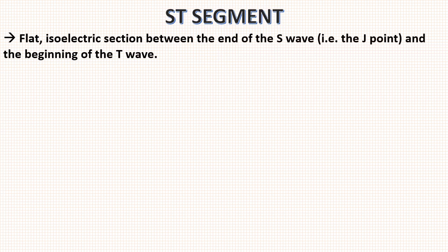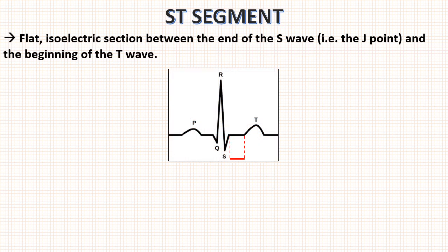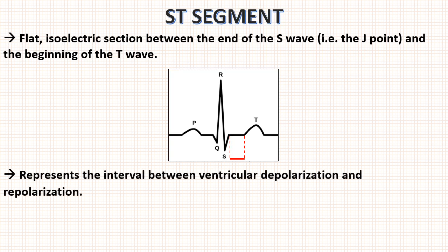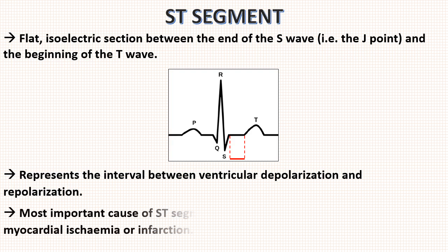Next is ST segment. It is flat isoelectric section between the end of S wave, i.e. the J point and the beginning of T wave. The segment represents the interval between ventricular depolarization and repolarization. The most important cause of ST segment abnormality i.e. elevation or depression is myocardial ischemia and infarction.